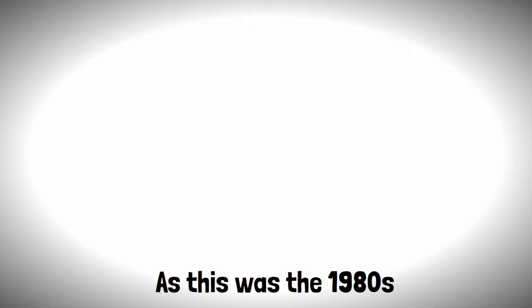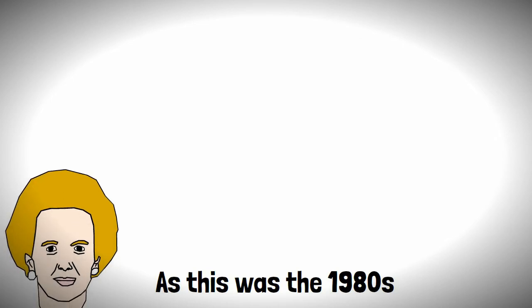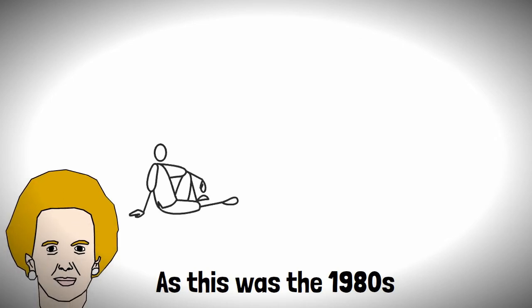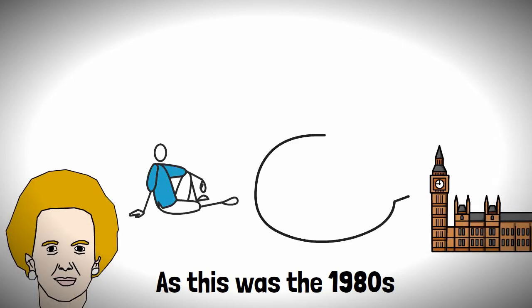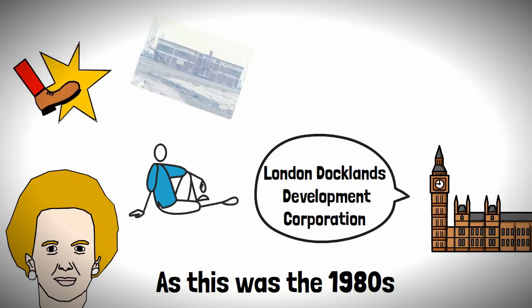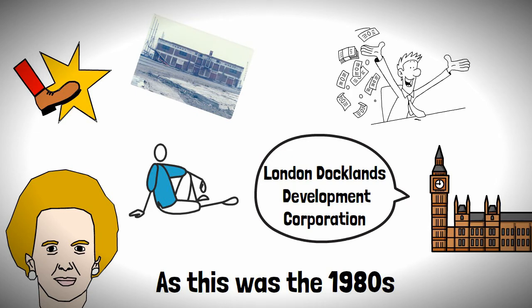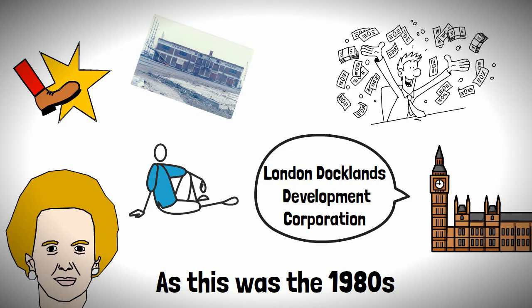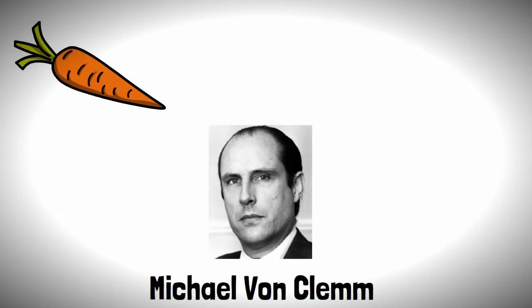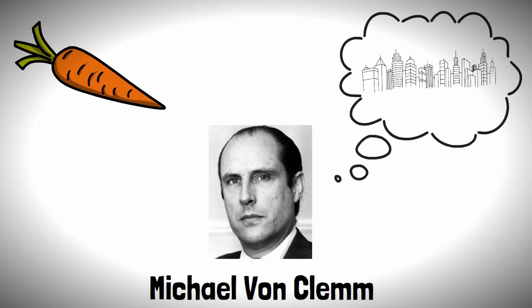As this was the 1980s and the era of Maggie Thatcher, all this disused land wouldn't be left idle for long. The government set up the London Docklands Development Corporation to kickstart regeneration of the area, which included tax exemptions and capital allowances. This carrot dangling did the trick when American businessman Michael Von Clem arrived with a vision to develop Canary Wharf into a new business district.